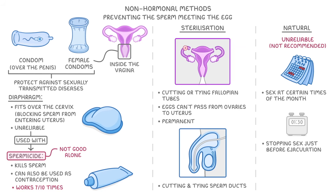Of course, the only way to be 100% sure of avoiding pregnancy is by abstaining from sex altogether.